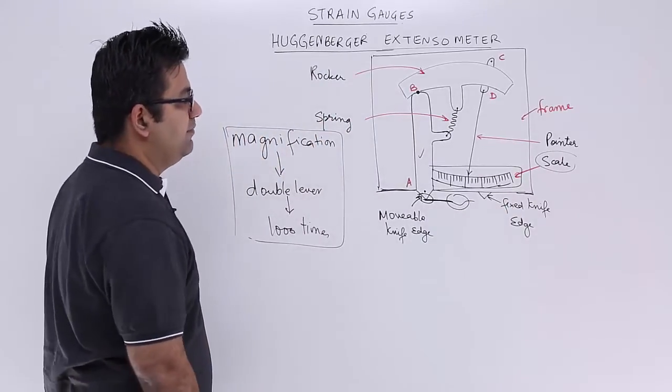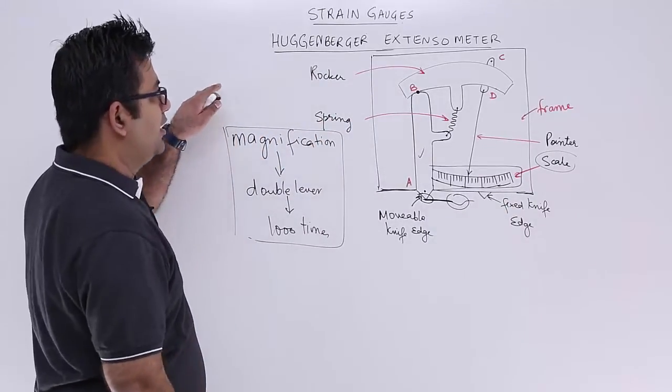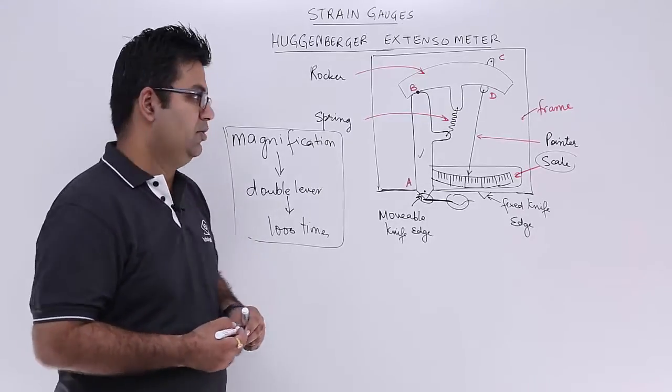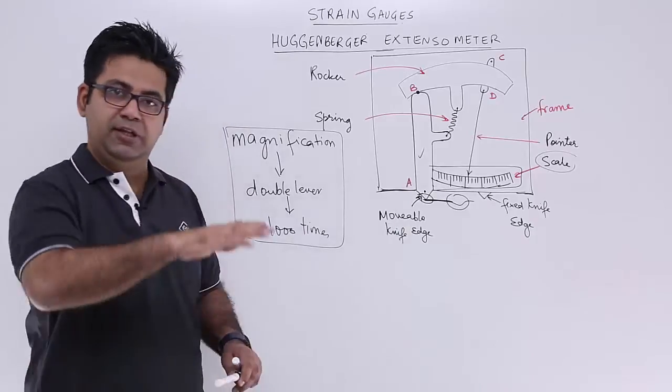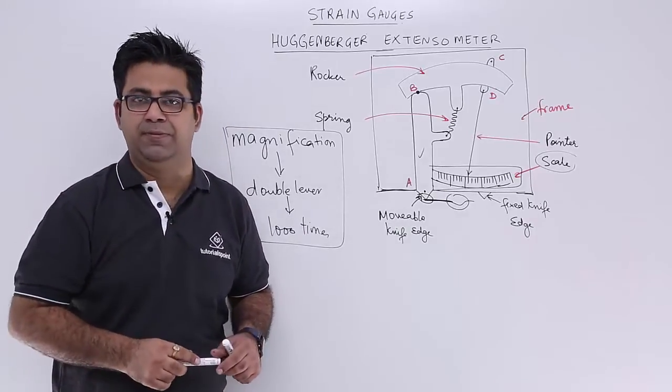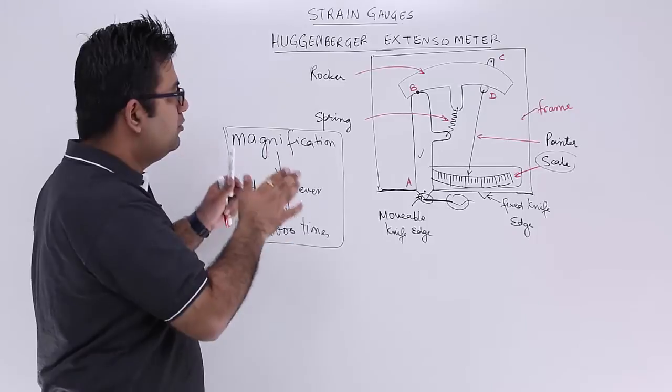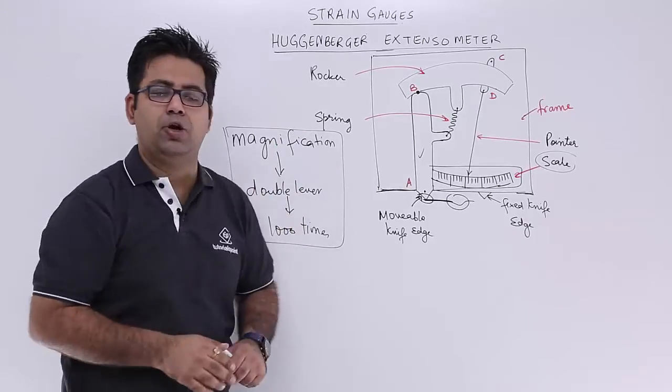So this is how we make use of a Hugenberger extensometer to actually look at the variations in the smoothness of a surface. So I hope you understood this. So this is what you need to understand in extensometer topic. After this let's move on to the electrical strain gauges.